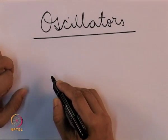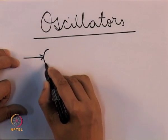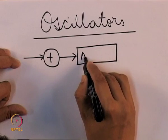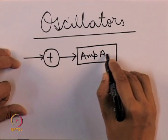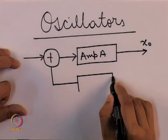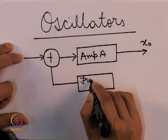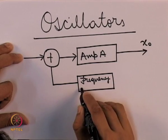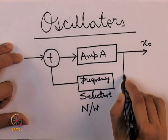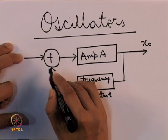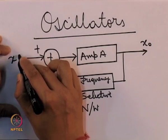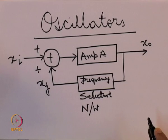Let us first go back to the feedback loop which we had discussed while discussing op amps. Note here I am choosing positive feedback as opposed to negative feedback — this is my feedback loop, which we had already discussed.